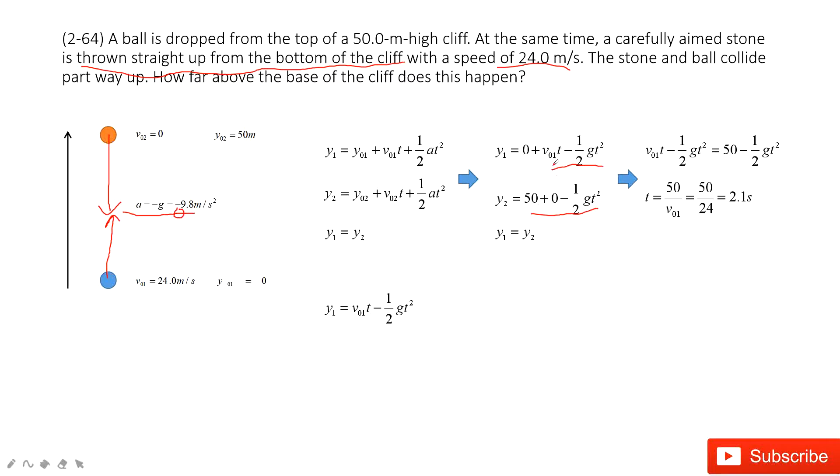It is v01 t minus one half gt square. So then we input t, we input g, and we input v01. We get 29 meters. Thank you.